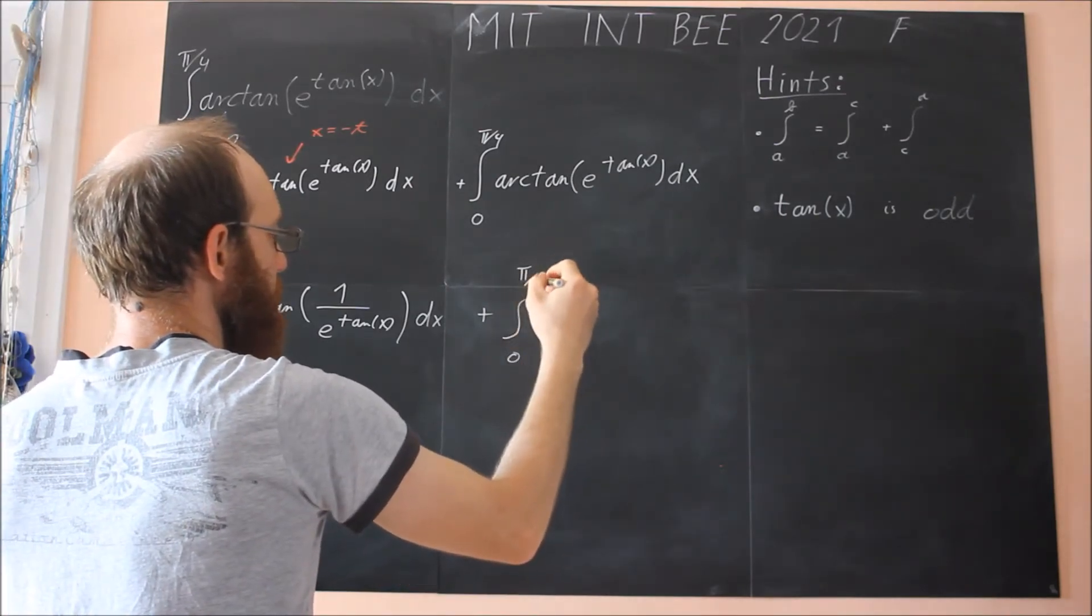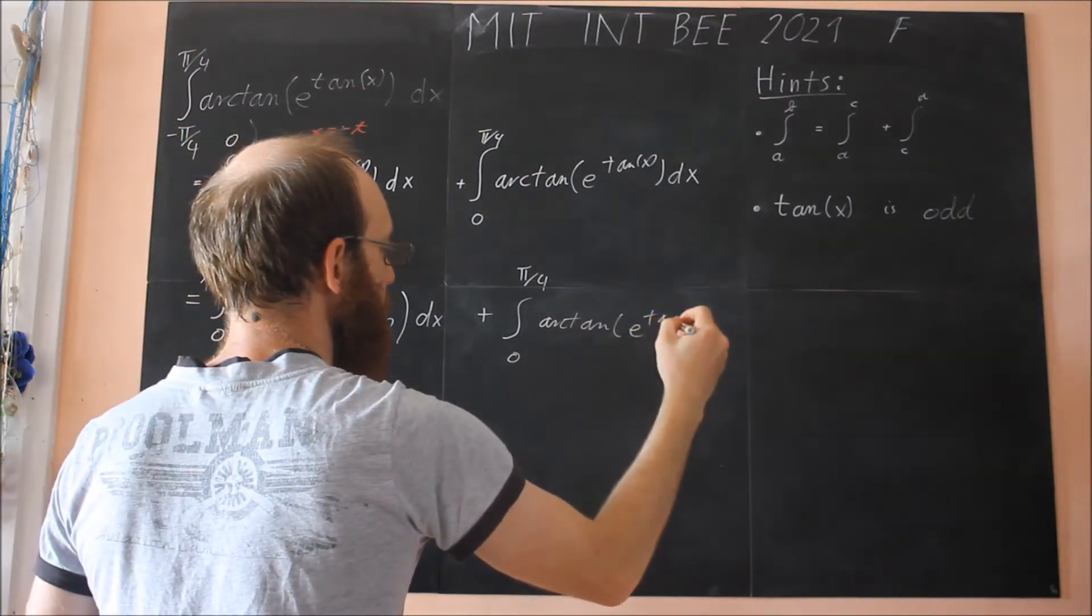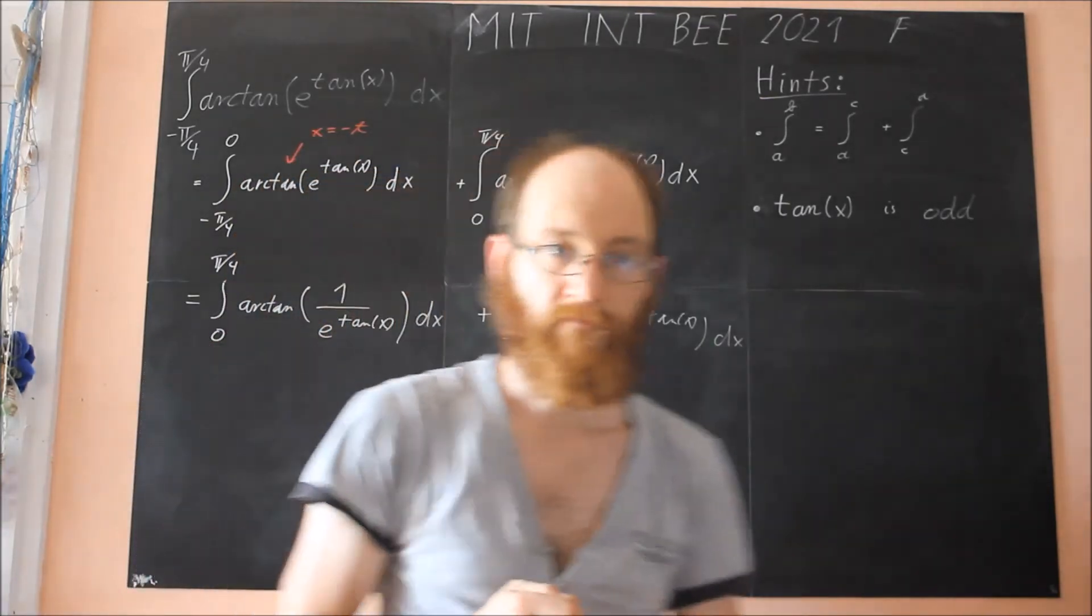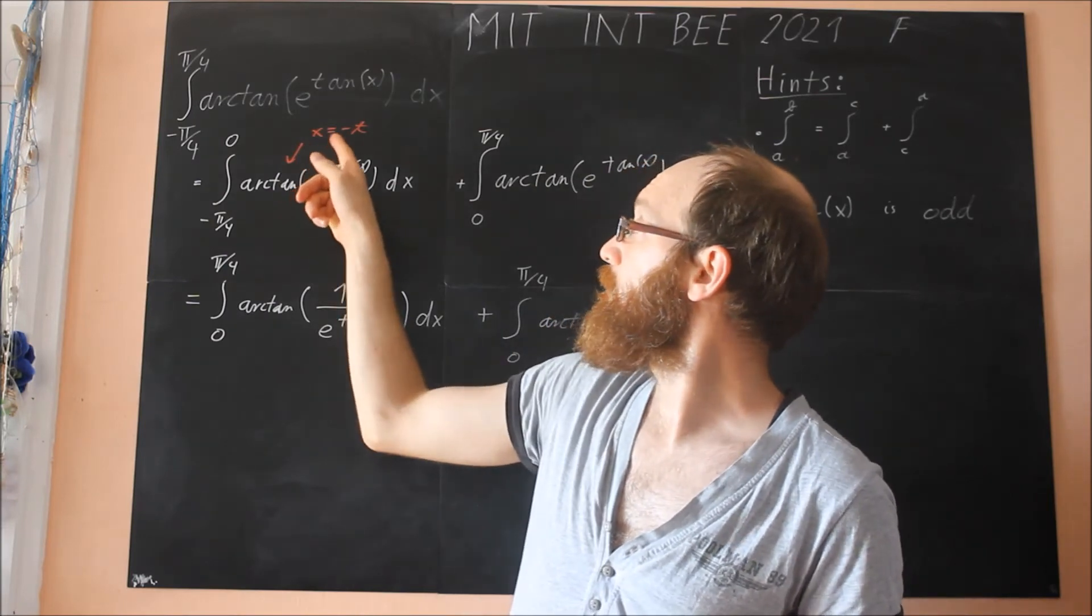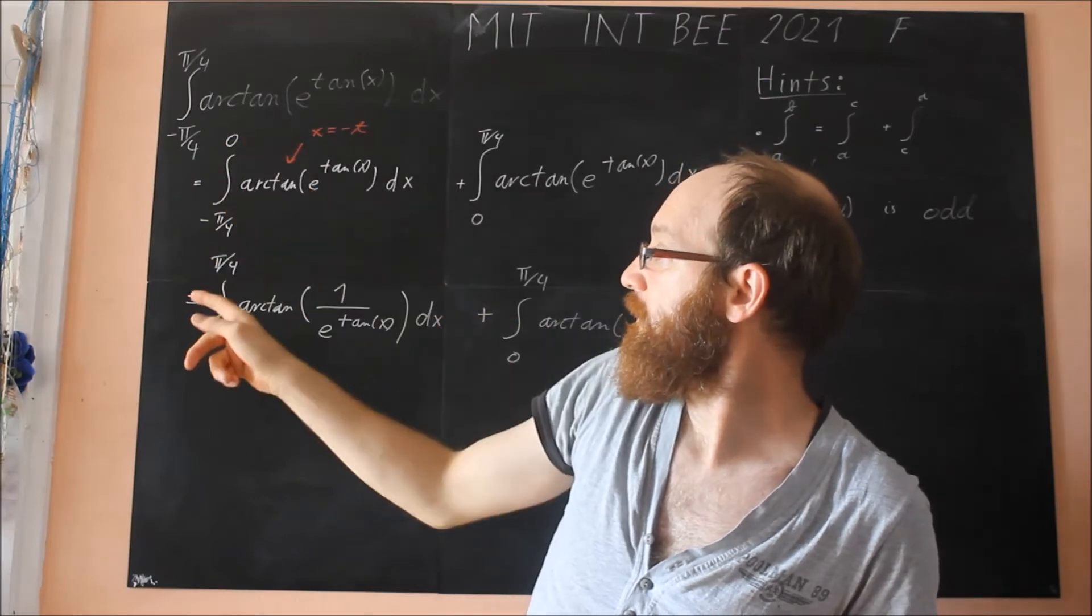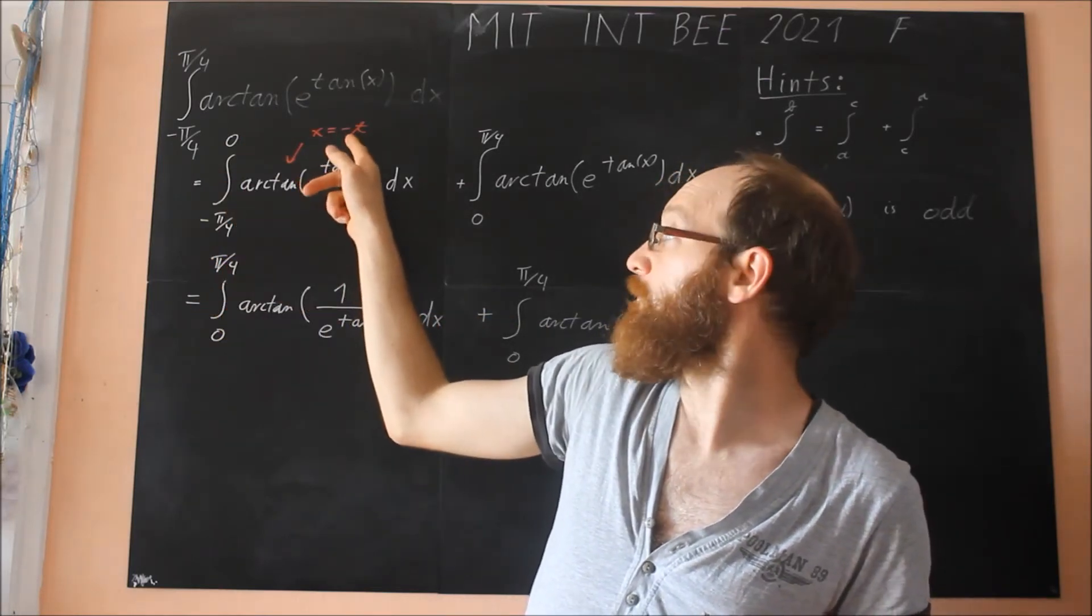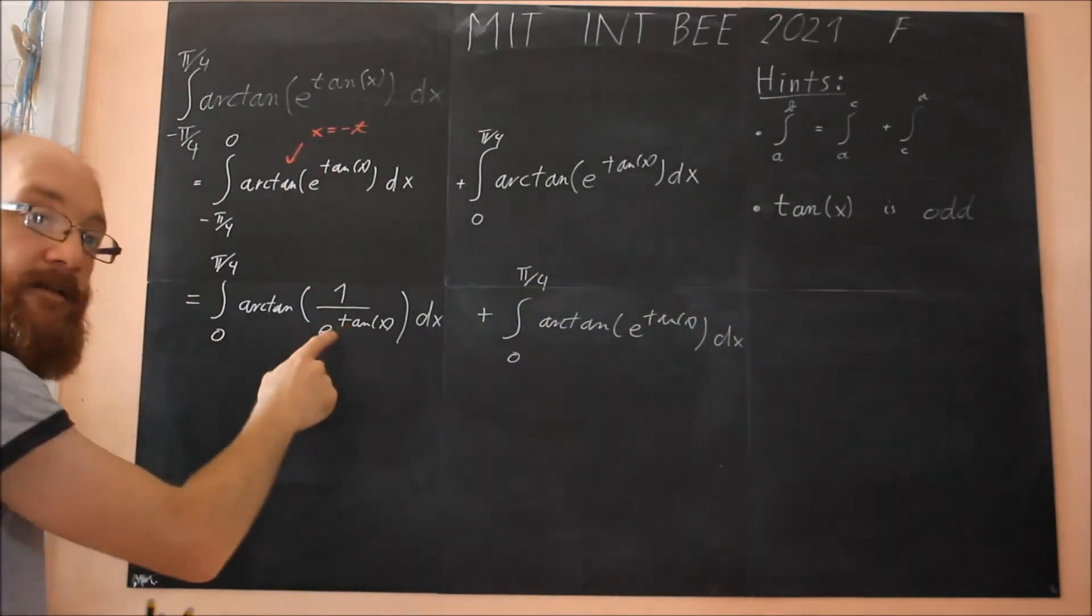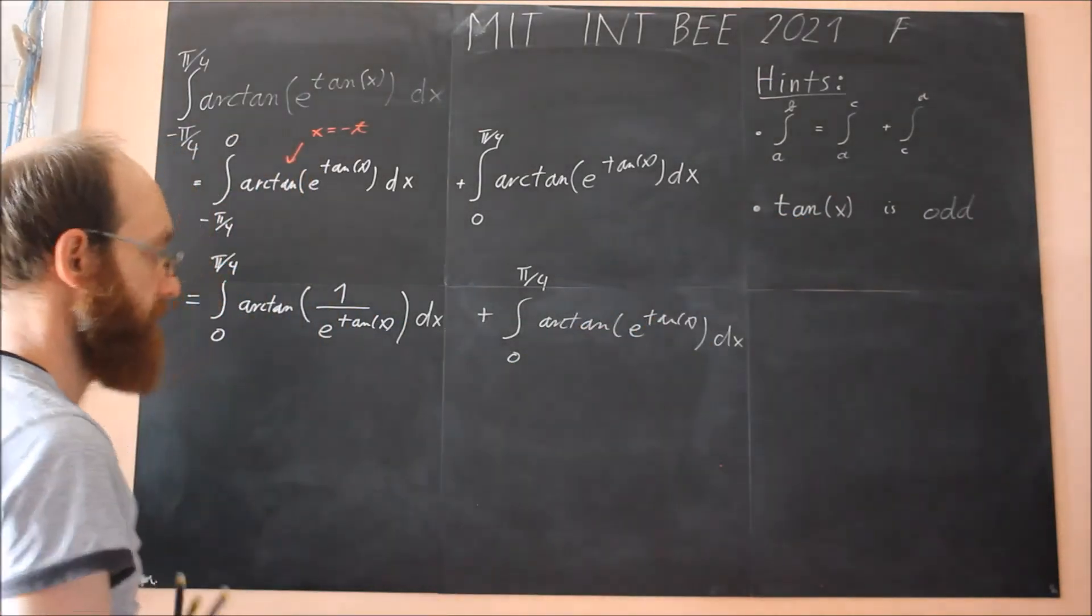Plus the second integral, we leave it as it is. Inverse tangent e to the tangent of x. So again, if you make a simple substitution, x to the minus t, we get the minus here. The minus, we can switch the boundaries from zero. And then, because of the substitution, the signs get also changed here. And e to the minus tangent is one over e to the tangent. So this is where we use the fact that tangent is odd.